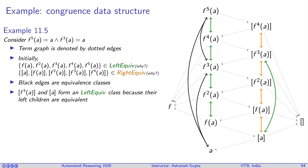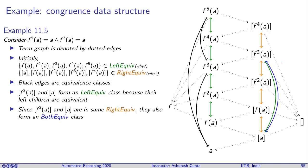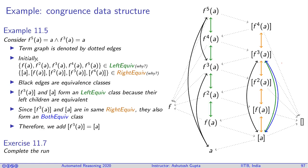Now we apply the data structure to find the congruence. Since F^3(A) and A form a left-equi — their left children are equivalent — two nodes should belong to left-equi because their children are equivalent, so we introduce a green edge. They are also already in right-equi, so we introduce a blue edge between them. Once we introduce the blue edge, we introduce an equality and go ahead recursively. The algorithm continues until no further equalities need to be applied.